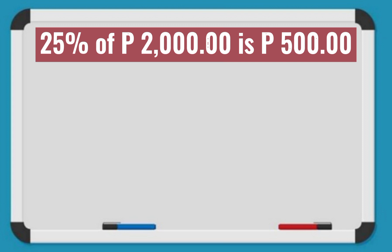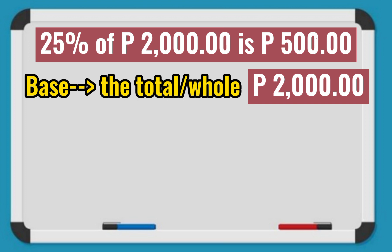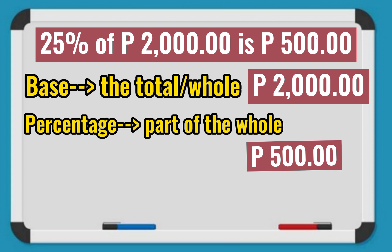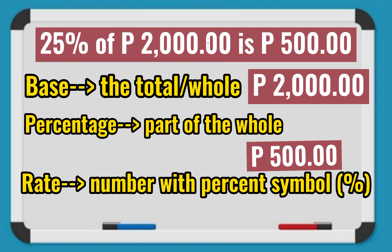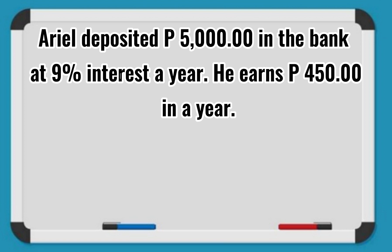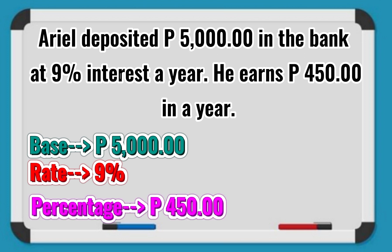Let's identify percentage, rate, and base. The base is P2,000 — it is the total or the whole. The percentage is P500 — it is part of the whole. The rate is 25% — it has the percent symbol. In another problem, the base is P5,000, the rate is 9%, and the percentage is P450.